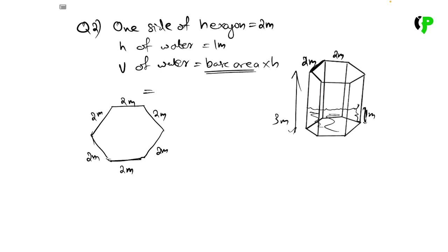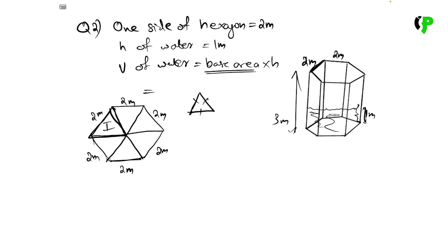Now, we will divide the hexagon into triangles. The figure is a triangle. Since all sides are equal, the area of each equilateral triangle is root 3 times a squared divided by 4.